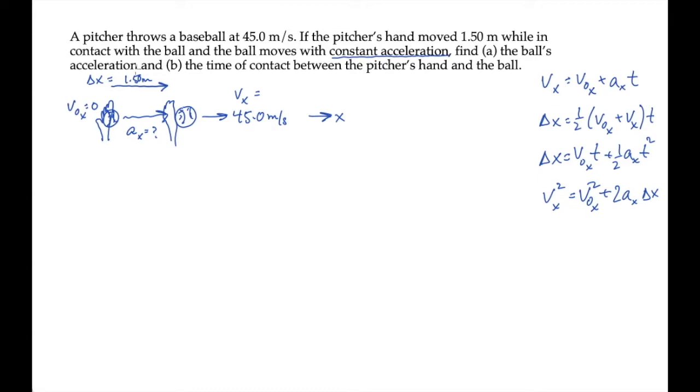Part A asks us to find the acceleration. So we're going to look for a kinematic equation that contains as its only unknown the ball's acceleration. The first one contains the acceleration, but we don't know the time, so we have two unknowns. The second one doesn't have acceleration in it. The third one has two unknowns, acceleration and time. But we come down to the fourth one. We know v_x is 45 meters per second, v_0x is zero, and delta x is one and a half meters. So a_x is the only unknown. We can use this fourth equation and solve for the acceleration.